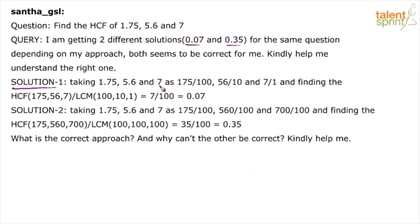Taking 1.75, 5.6, and 7 as 175 by 100, 56 by 10, and 7 by 1, and finding the HCF and getting 7 by 100, which is 0.07. This is wrong, Santha. I will tell you why it is wrong, but 0.07 is wrong. The correct answer is 0.35.